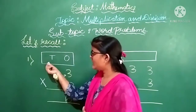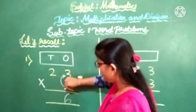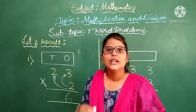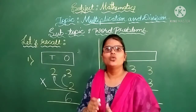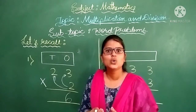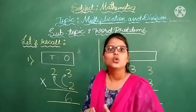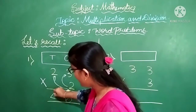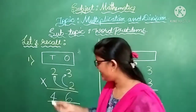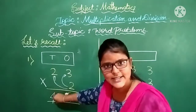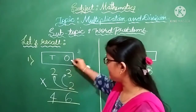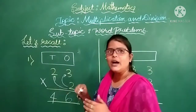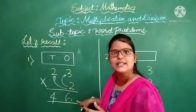And next, for the 10s part, you have to multiply this 2 again. 2 into 2. Remember the table of 2: 2 ones are 2, 2 twos are 4. Write down this 4 under the 10s column and this 6 under the 1s column. Then our product is 46.